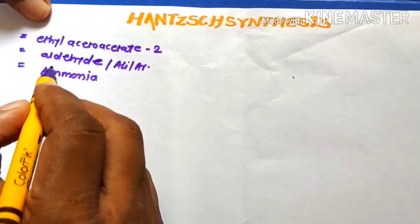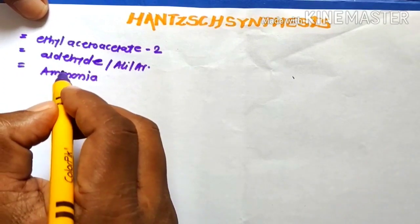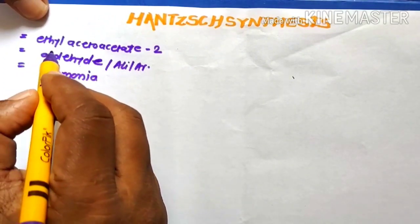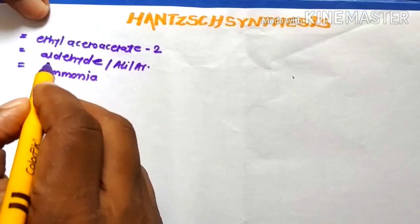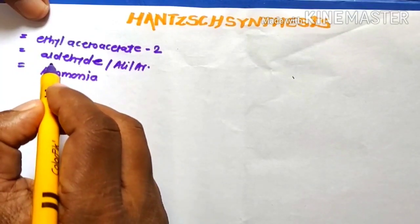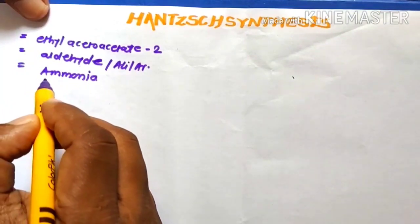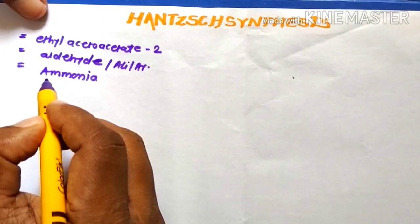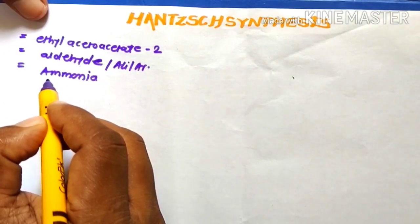These are the starting components of Hantzsch synthesis: 2 mol of ethyl acetoacetate, 1 mol of aldehyde, and 1 mol of ammonia — making it a tetracomponent condensation reaction.